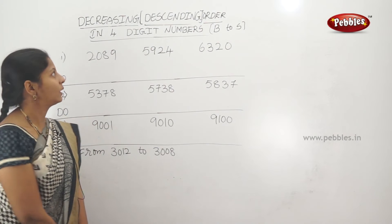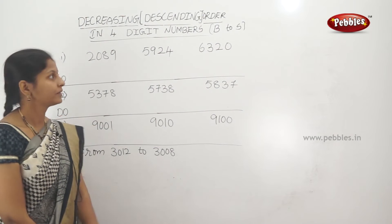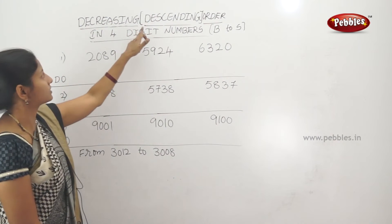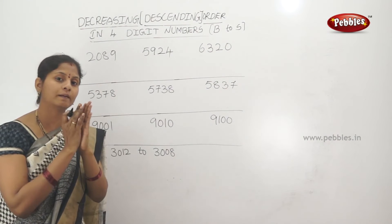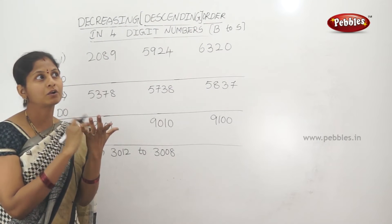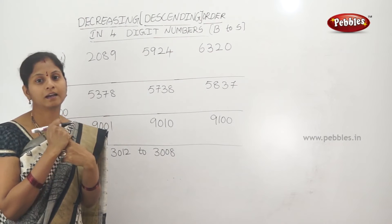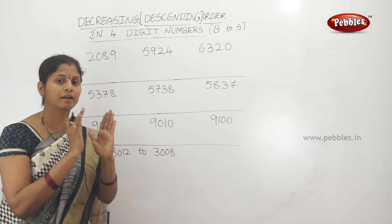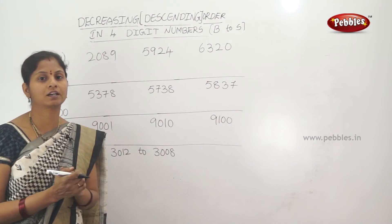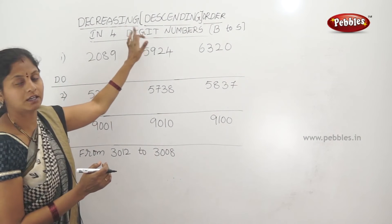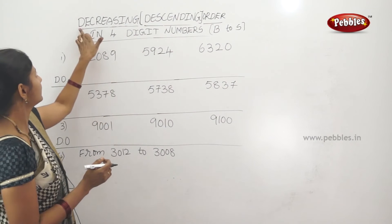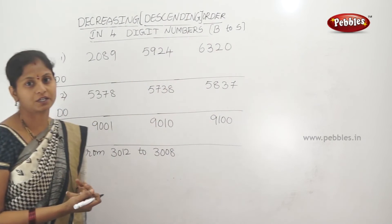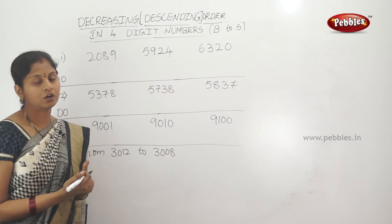Now, decreasing order and descending order. Ascending order is small to big; descending order is big to small — that is, decreasing order. Both D-words — descending and decreasing — mean we go from the biggest number to the smallest number.